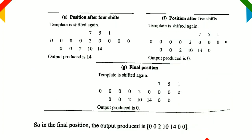Finally, you will get the resultant values as 0, 0, 2, 10, 14, 0, 0. This is the output image when doing the correlation operation. So this covers convolution and correlation for a 1D image.